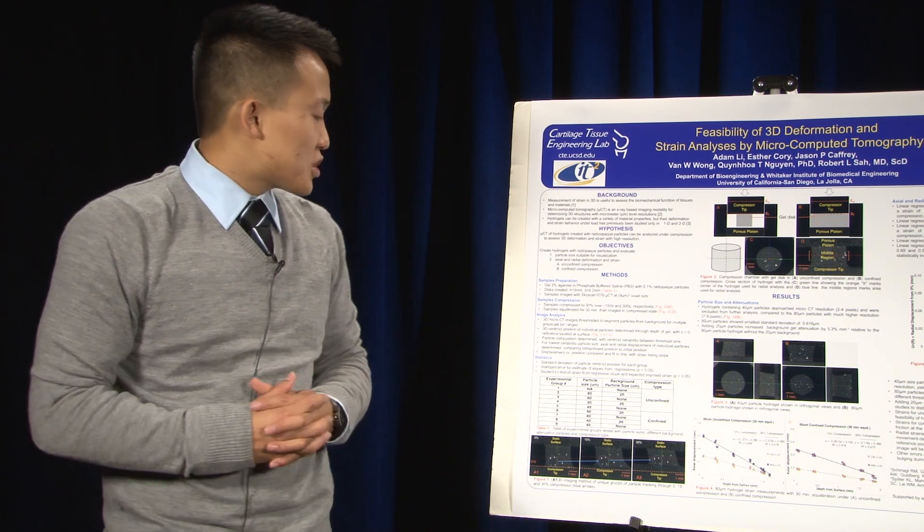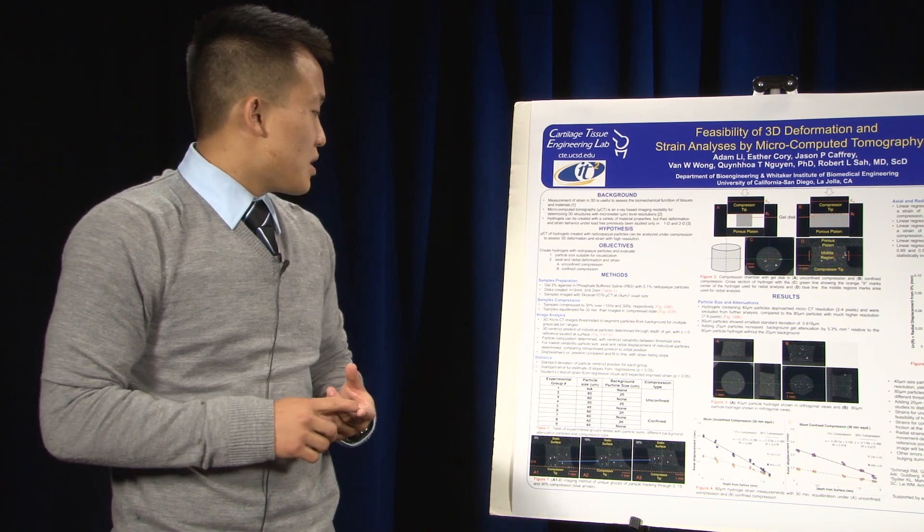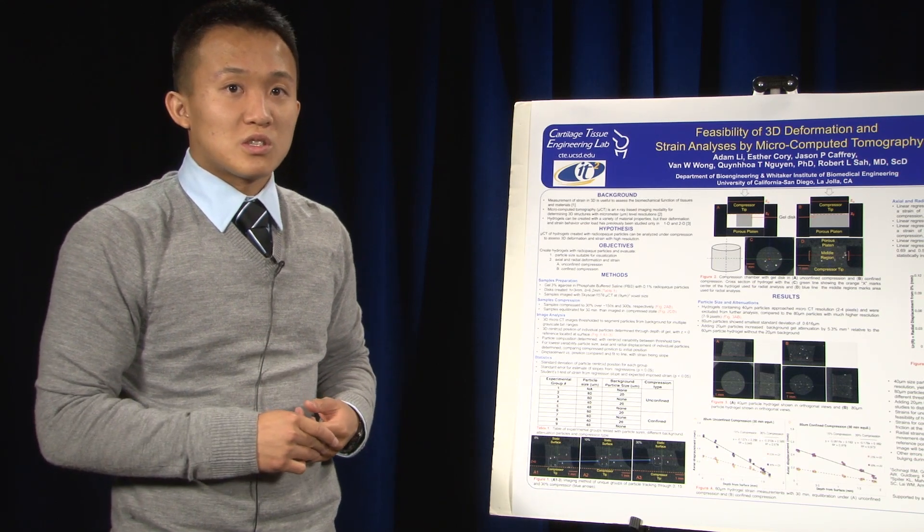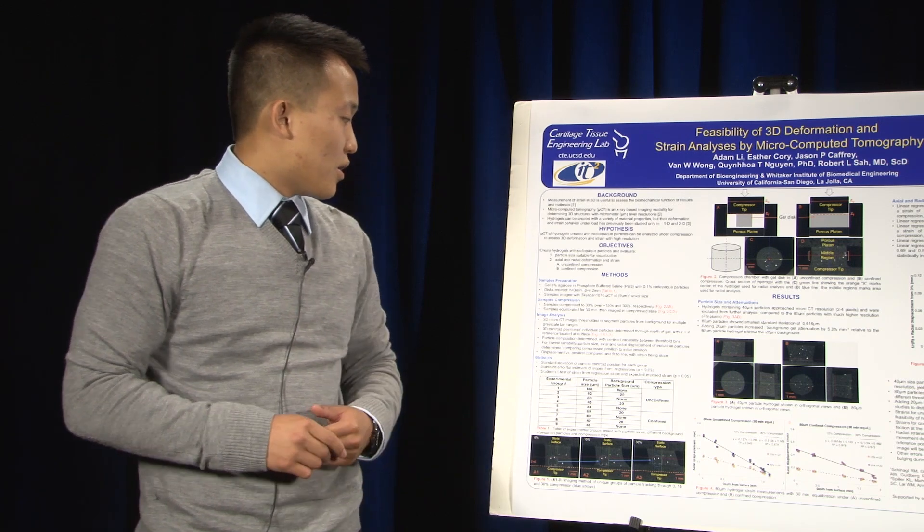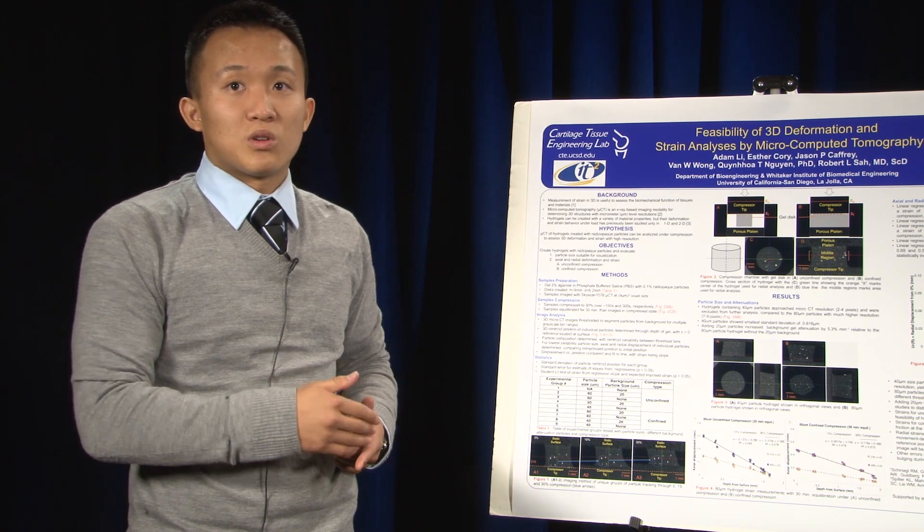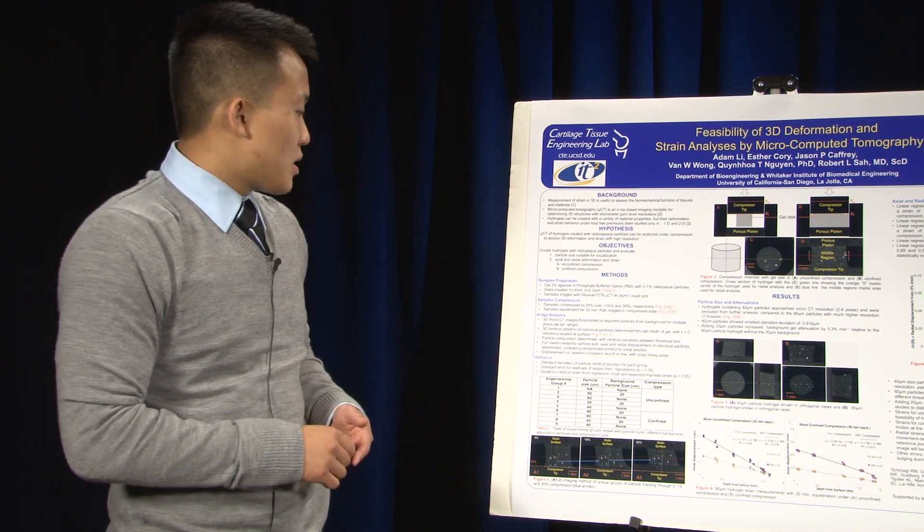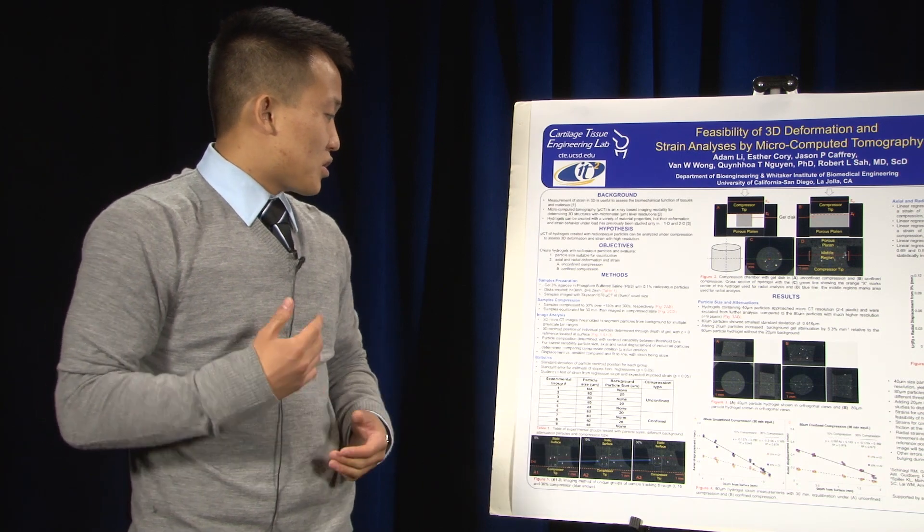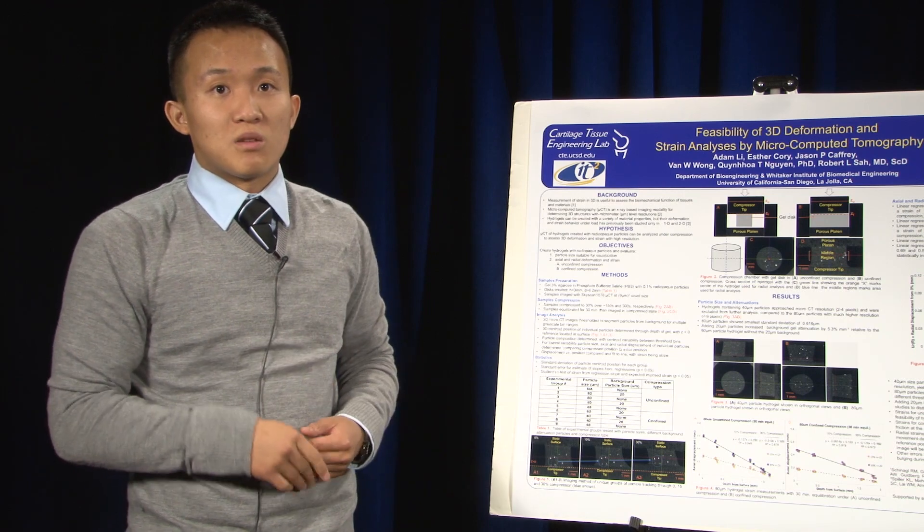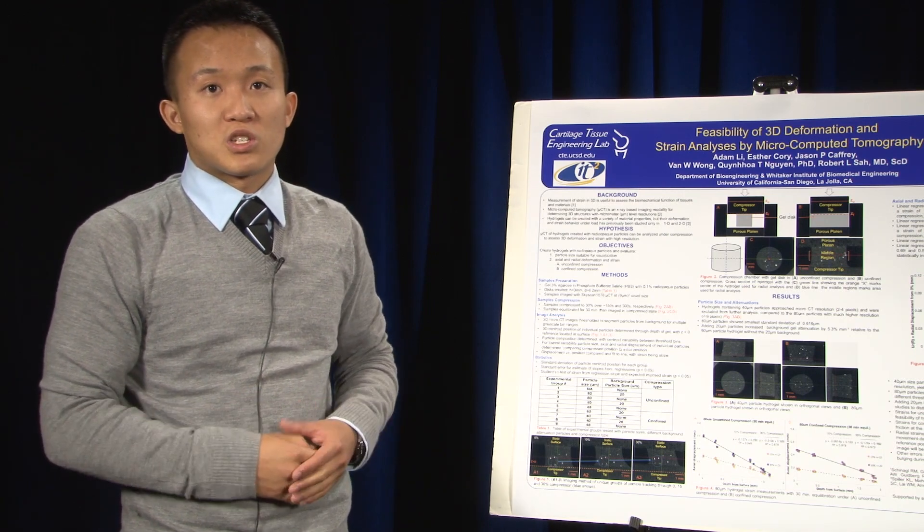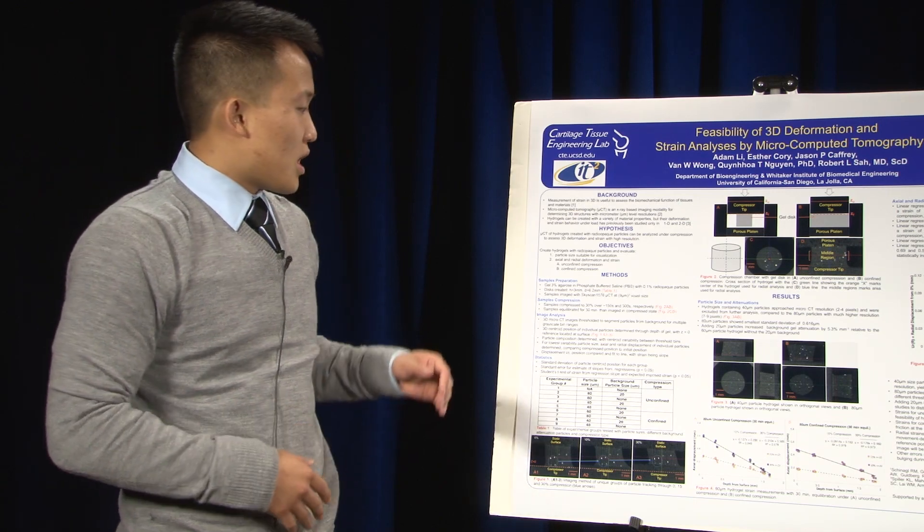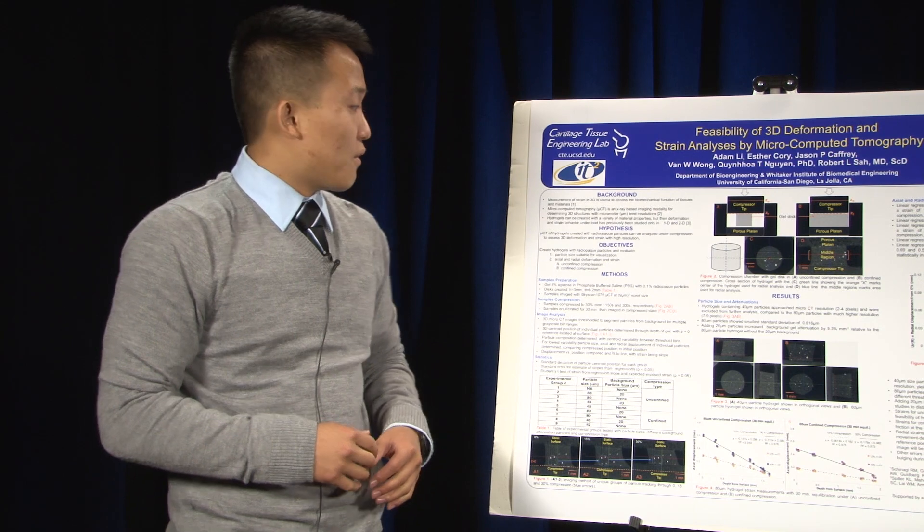The statistical measures that we took were, essentially, the standard deviation of the particle centroid position due to different thresholding ranges. Two, the standard error for the estimates of the slopes from regressions. Essentially, we were looking for whether or not our measurement of strain was accurate. And the third one was our student's t-test of strain from the regression slope and our expected imposed strain, whether or not this matched up with our 15 percent compression and our 30 percent compression. These are all tested with a p-value of 5 percent.